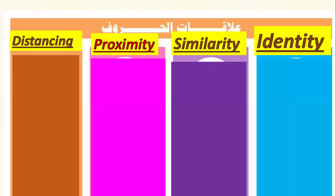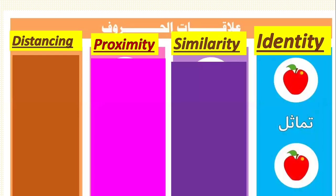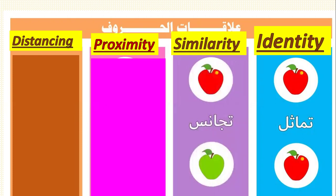Now let's study examples to understand the relationships between letters. Number one: identity — both letters are apples with the same color and same taste; both are fruit. Similarity — both are fruit but they have different colors; both are apples but different colors.